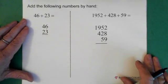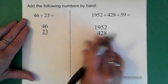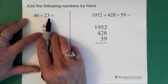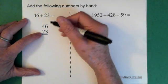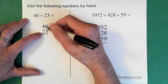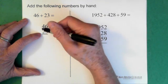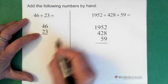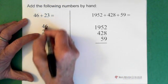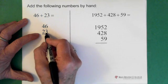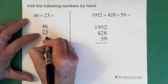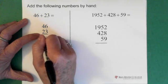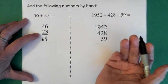Alright, so here we're going to add up a couple of numbers. 46 plus 23. When you're adding them, you line up your ones, alright? So the 6 over the 3, and you line up your tens. The 4 over the 2. Now, we just add them vertically. So 6 plus 3 is 9. And 4 plus 2 is 6. And that's the answer.